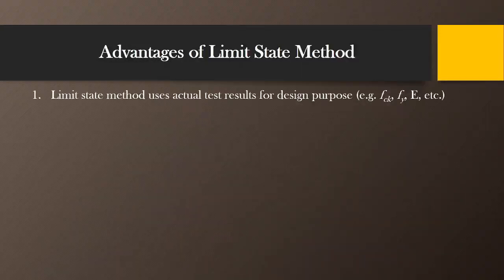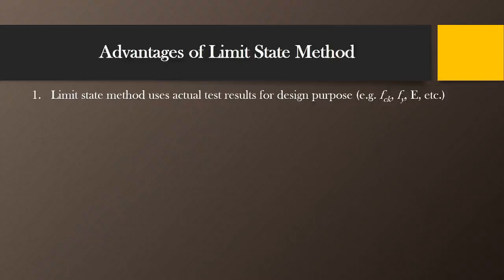The first advantage of limit state method is that it uses actual test results for the design purpose. In limit state method we use the characteristic strength concept, and we determine this characteristic strength by actual test results obtained in the laboratory after testing the materials. For example, FCK is the characteristic strength of concrete, FY is the characteristic strength of steel, and the modulus of elasticity for both concrete and steel can be calculated based on experimental values. So this will be a more realistic method for the design purpose.